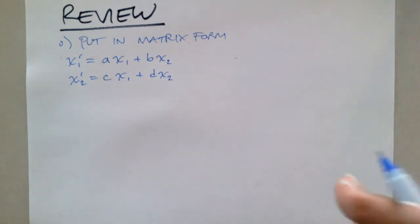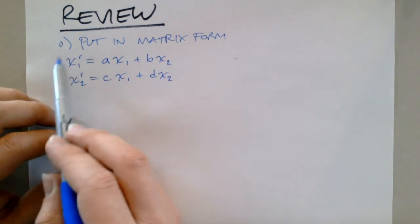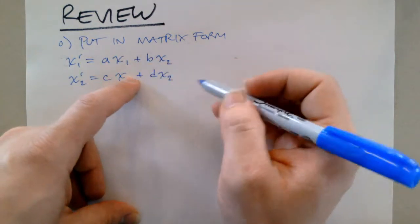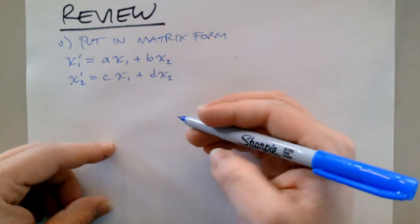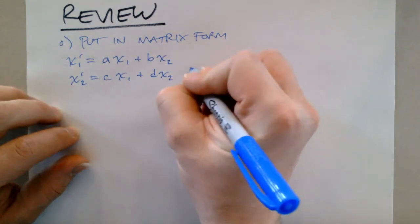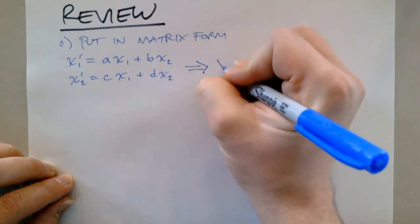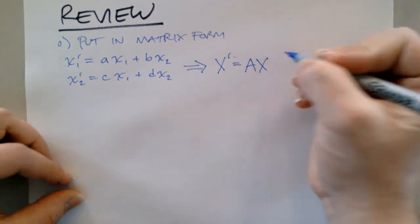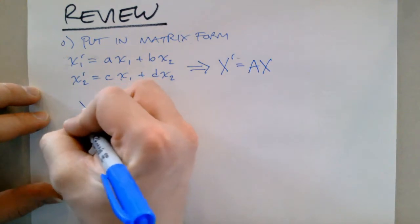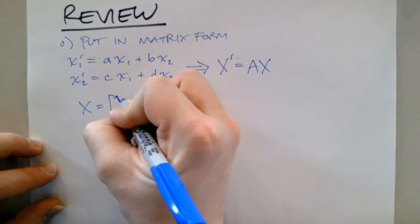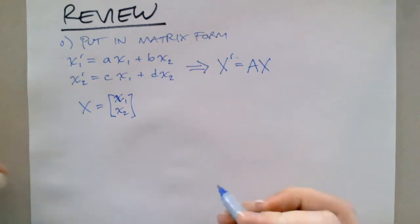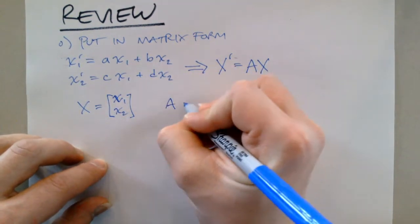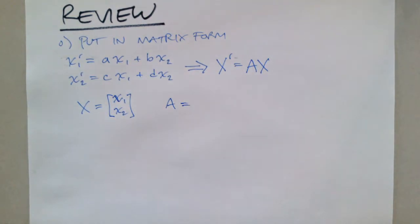If we have a system of just two equations — a two-dimensional system — with dependent variables x1 and x2, and independent variables on the other side, we can rewrite this in matrix form. It looks like capital X prime equals A times capital X, where capital X is just a column vector with lowercase x1 and x2. When we differentiate this, those become the differentials, and A is just a two-by-two matrix.